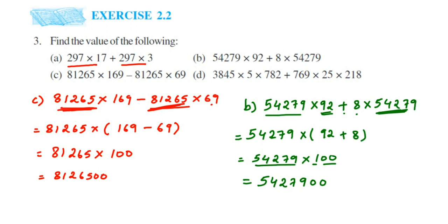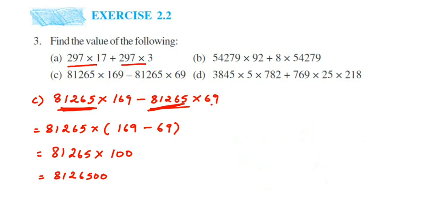Now the last problem. We have three numbers on both sides of the plus sign, so we need to identify which number to take out — it must be present on both sides. In this last question we have 3845×5×782 + 769×25×218. There's no single number present on both sides right away, so I'm going to split 25 as 5×5, so that one 5 will be common.